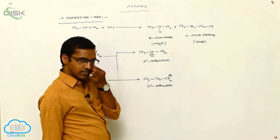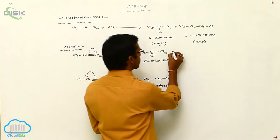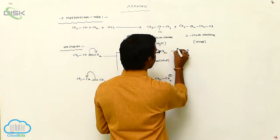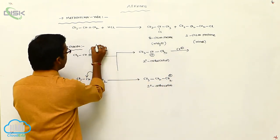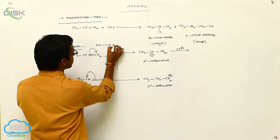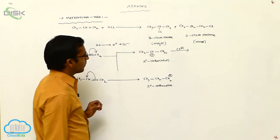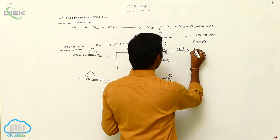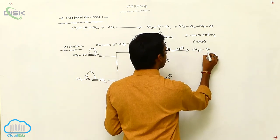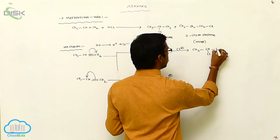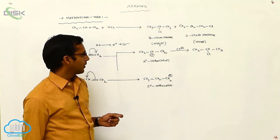The negative charge is attached to the positive charge. Since HCl is present, HCl undergoes cleavage giving H+ and Cl-. The addition of Cl- to the secondary carbocation finally gives CH3CHClCH3, which is 2-chloropropane.